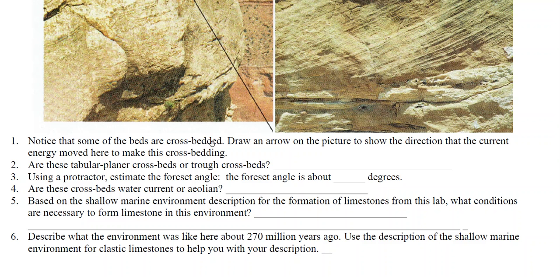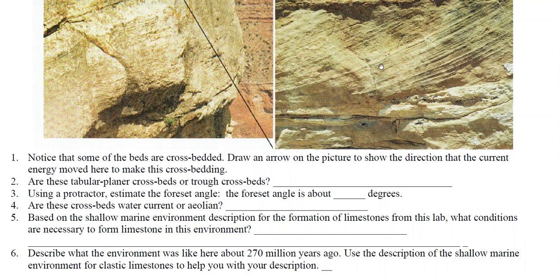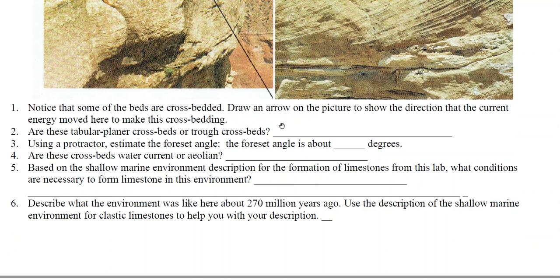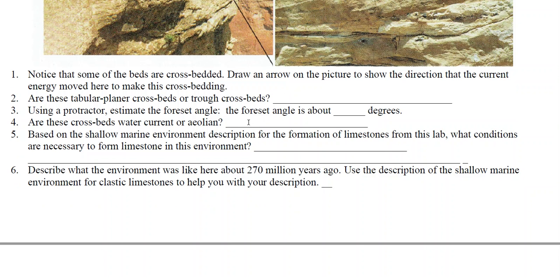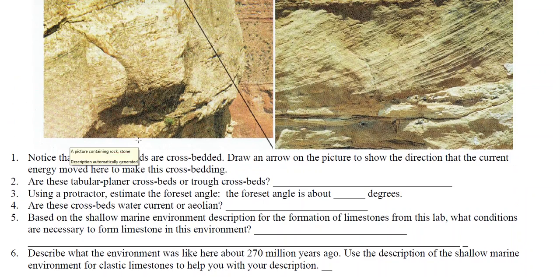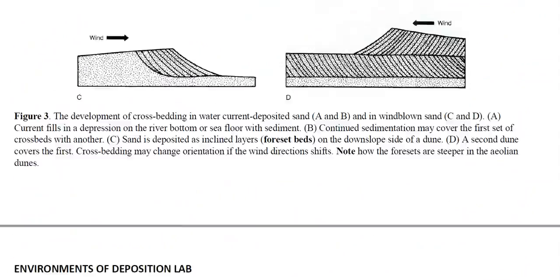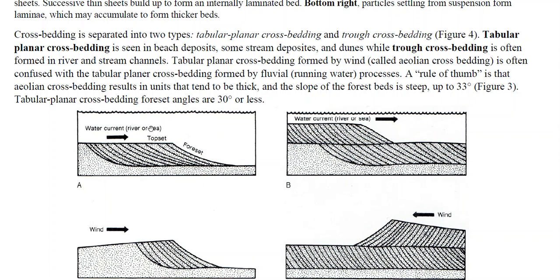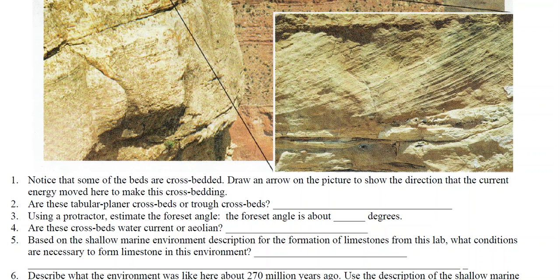Now we're looking at the questions based on the foreset angle of the cross beds — draw an arrow to show the flow direction. These were identified as tabular planar cross beds. Use a protractor to measure the angle: place the horizontal on the bullseye and measure the angle up. There obviously had to be water currents — similar to what we discussed earlier in the lab — so we're looking at a shallow sea here for the Kaibab Limestone cross bedding.